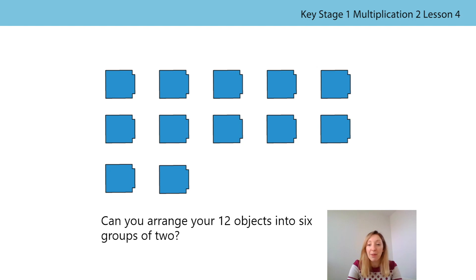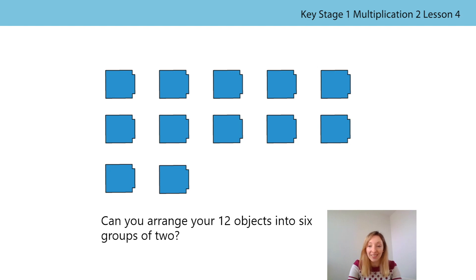Now this time I would like you to have a go at arranging your 12 objects into six groups of two. You'll either need to go and get three more plates so that you have six plates, or draw a new set of 12 objects ready to group them. Press pause on the video and have a go at arranging your 12 objects into six groups of two. Off you go.